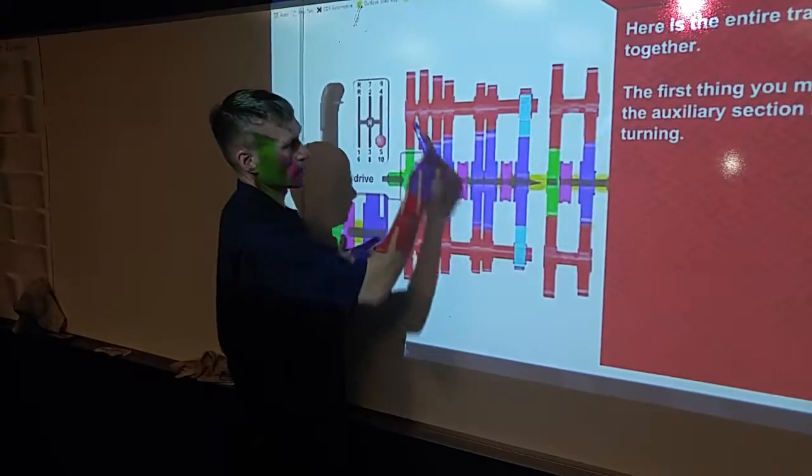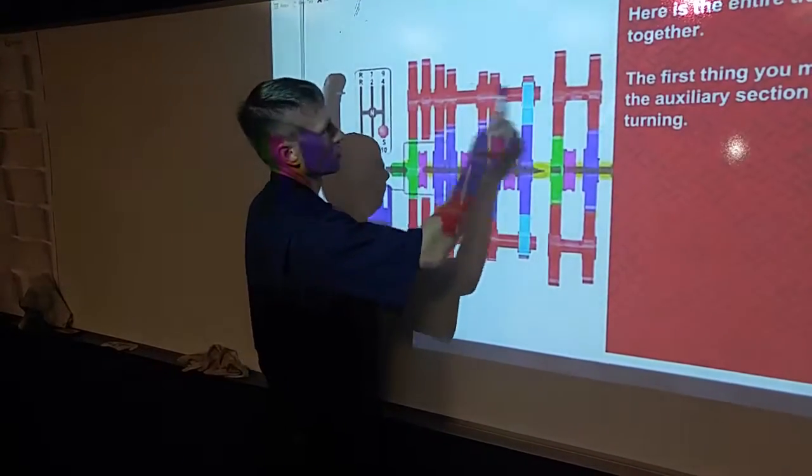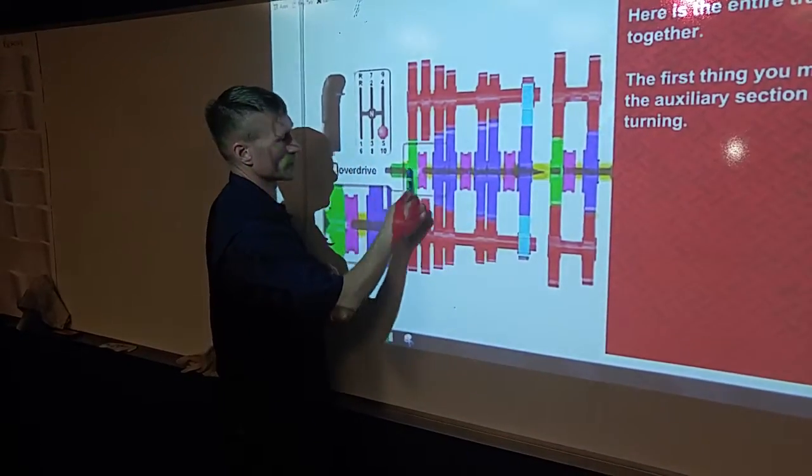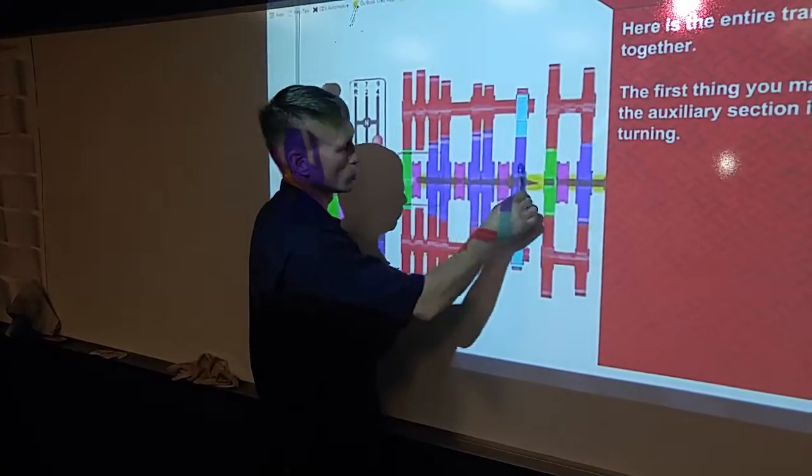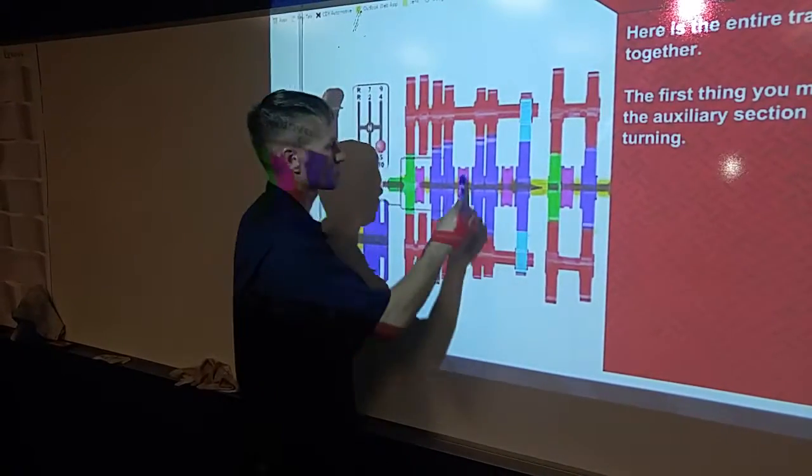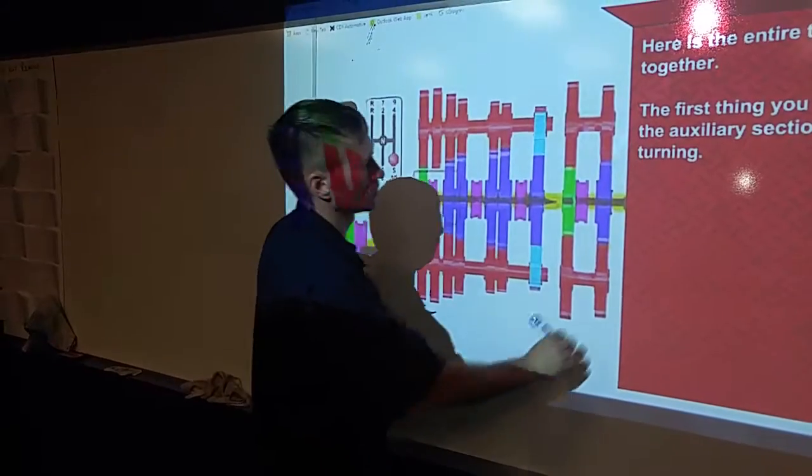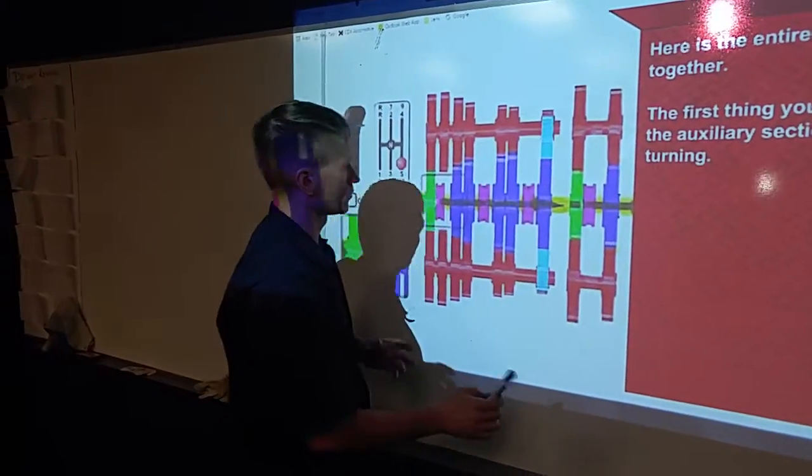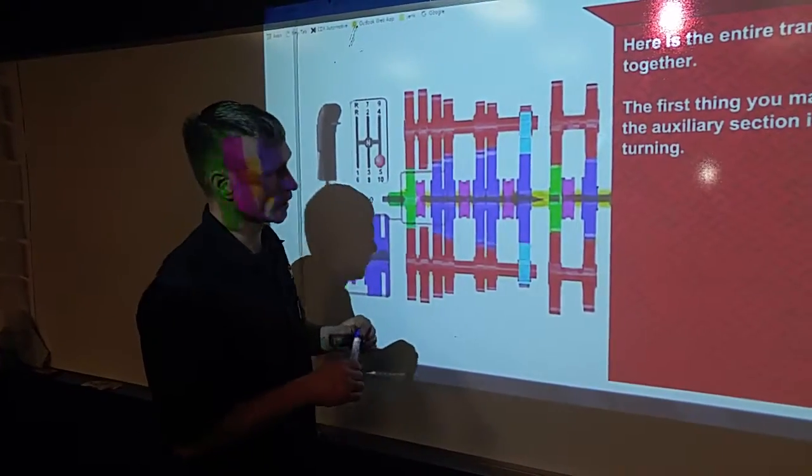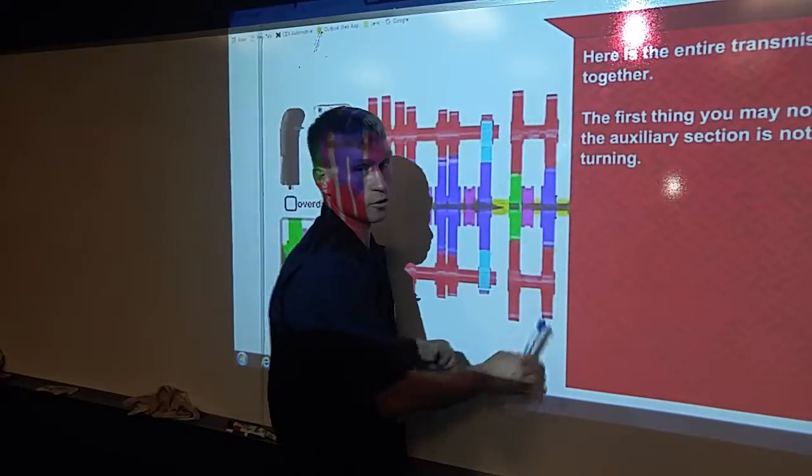As you see, the red are the counter shafts, the green is your input, the blue are your drive gears, the purple here is your clutch. This portion is the auxiliary system, which I will get to shortly, but still color coded, still same concept.